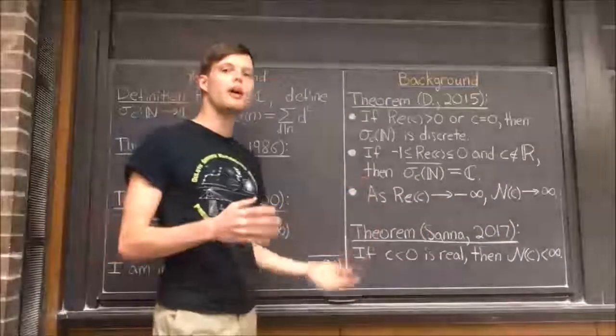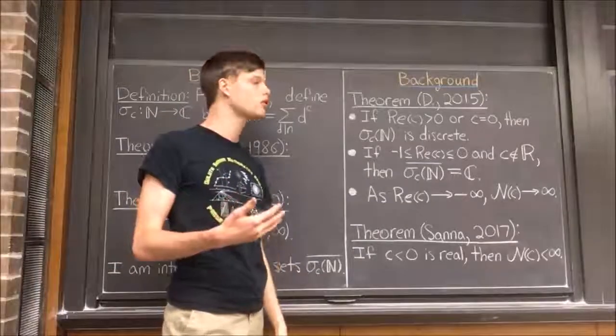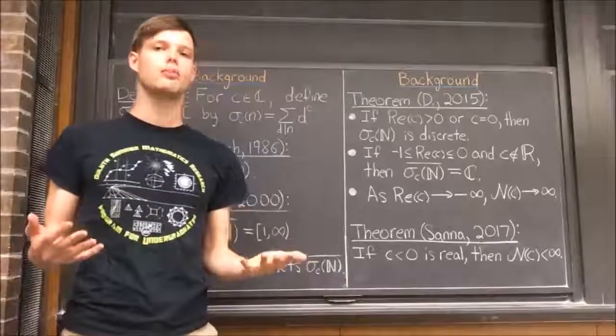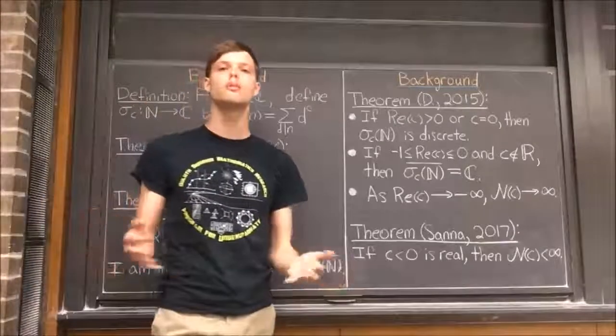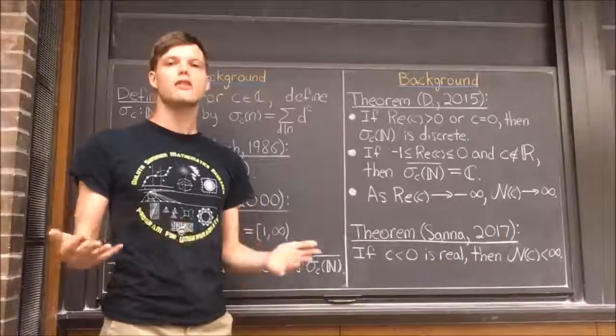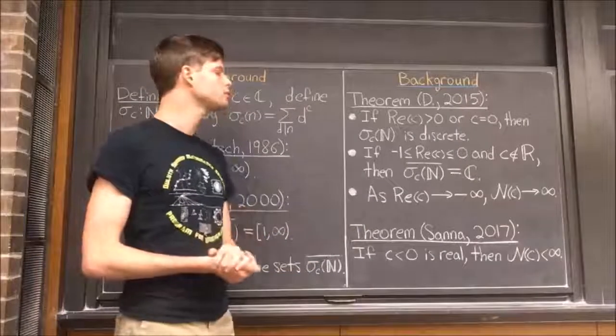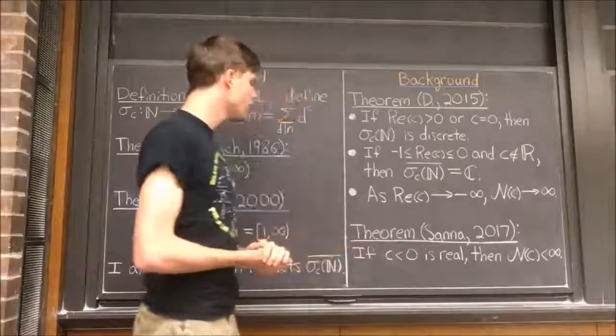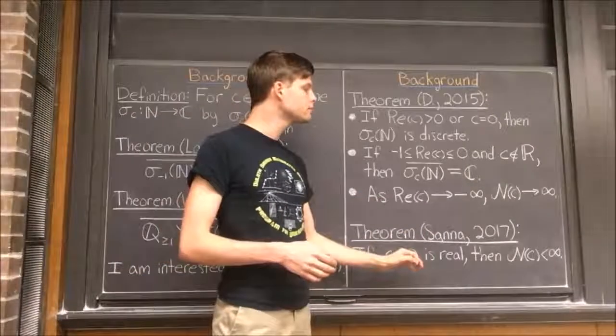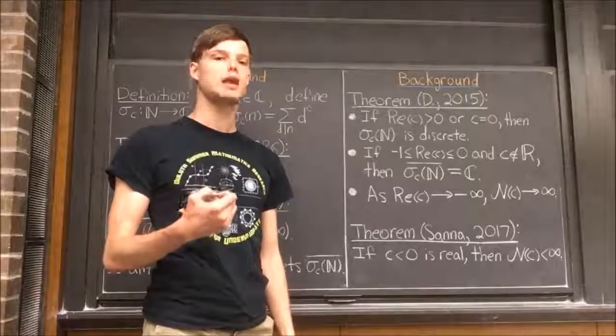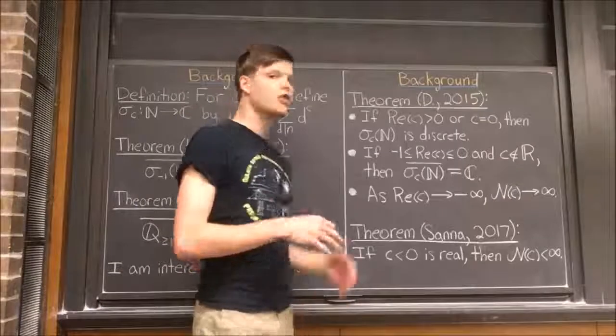This does not exclude the possibility that the number of connected components could be infinite. For example, if the real part of c is positive, say if c equals 2, then the closure of the range of σ_c does have infinitely many connected components. However, Carlos Sanna has proven, among other things, that if c is a negative real number, then the closure of the range of σ_c has only finitely many connected components.